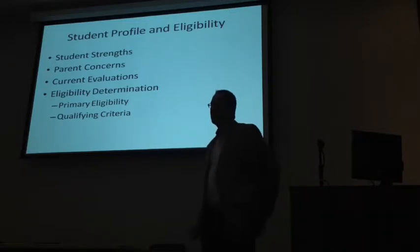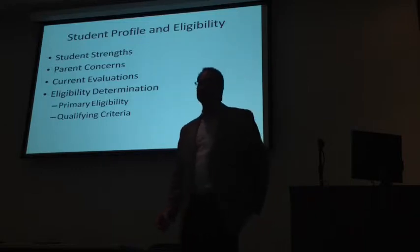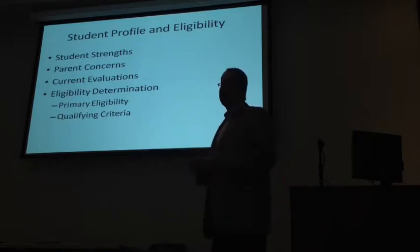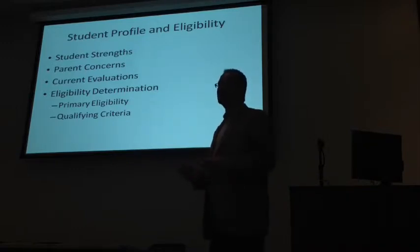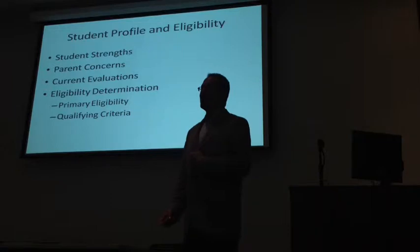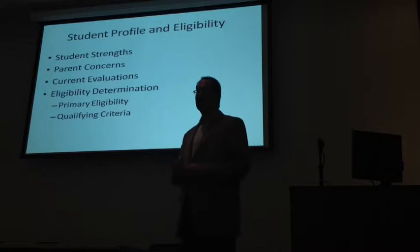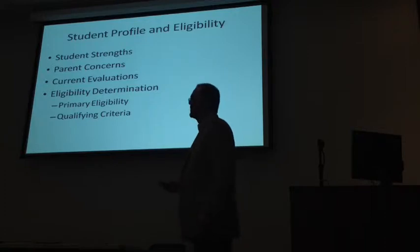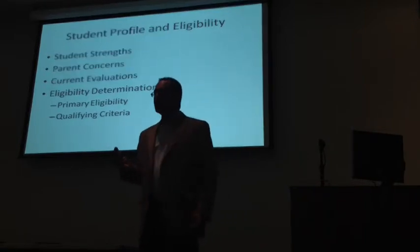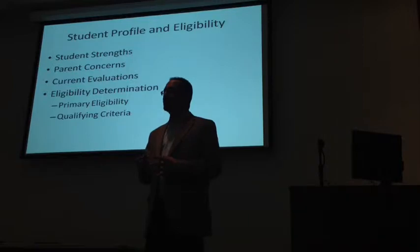Student profile and eligibility is all right on the first page of the IEP. We get the student's strengths and any parent concerns. These things can all be drafted ahead of time. It's ideal that the parent provides input prior to the IEP meeting so it's not a lengthy process — I was at one last night until 8 o'clock. They can be very long, depending on the needs of the student.